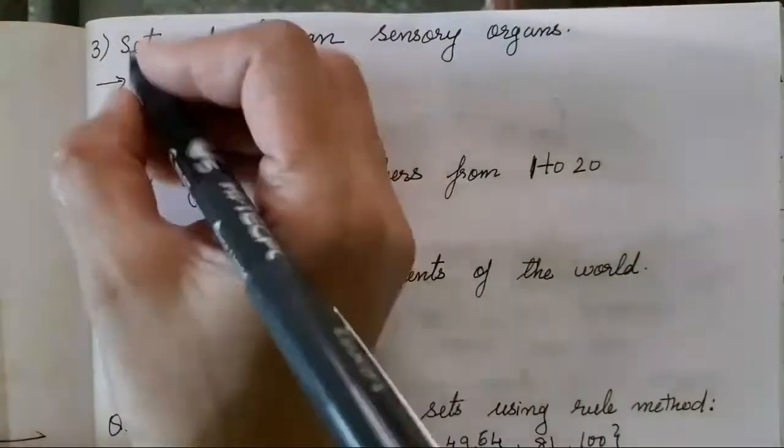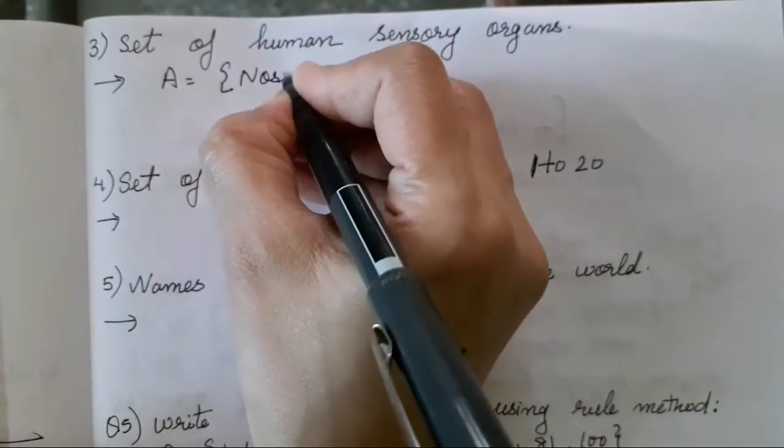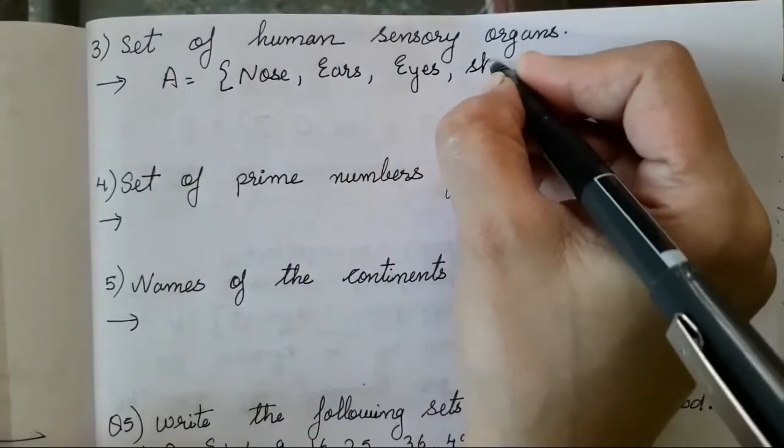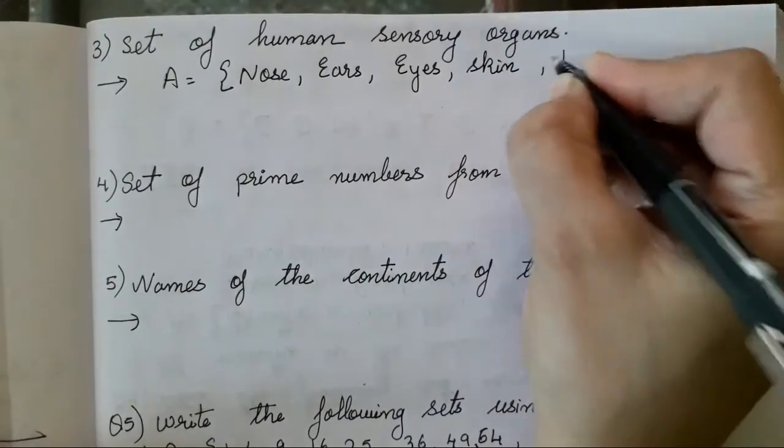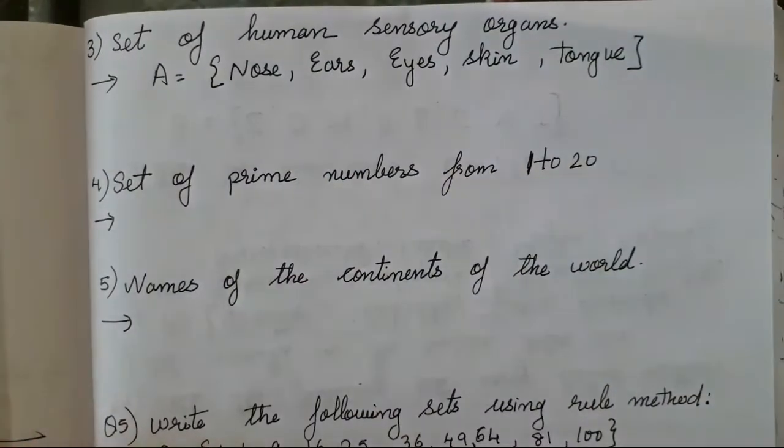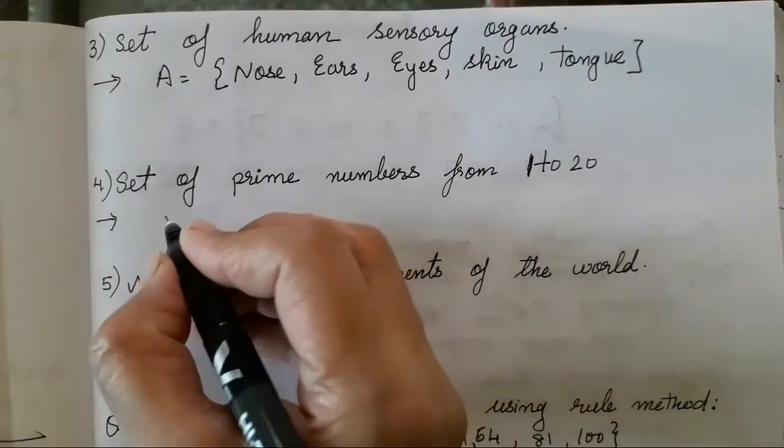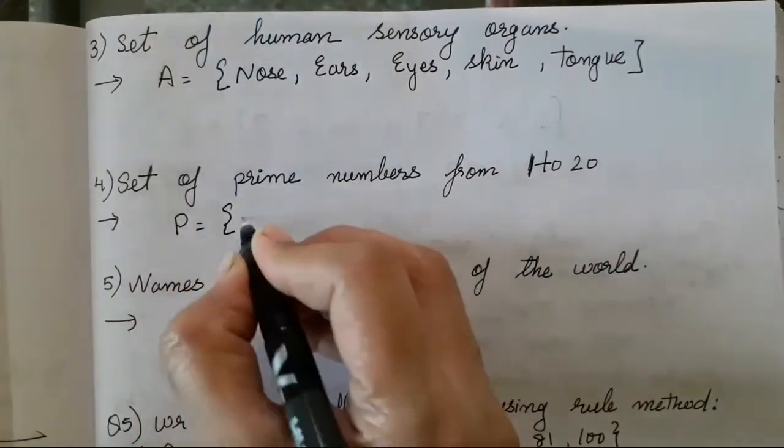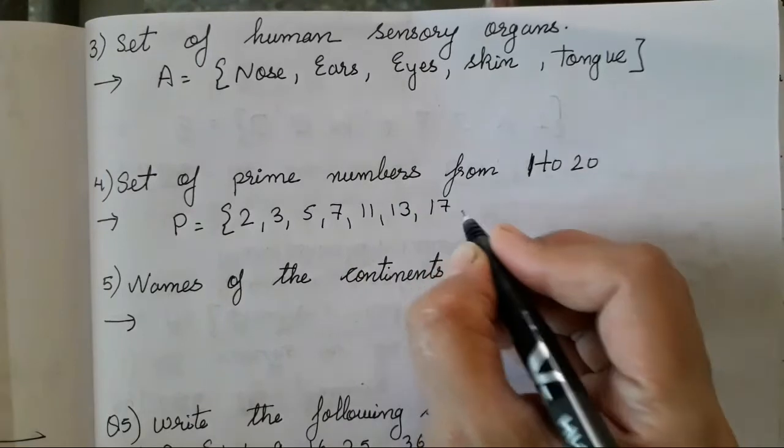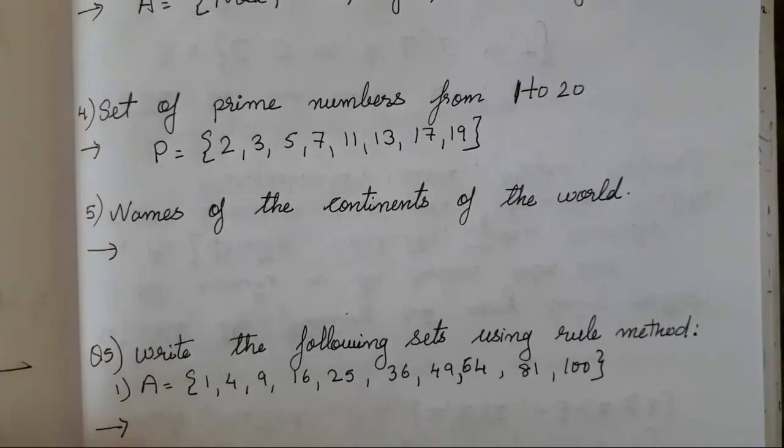So set of human sensory organ, you all can name it as A, which is nose, ears, eyes, skin and tongue. These are our sensory organ, isn't it? So we have to write them in the form of elements. Set of prime numbers from 1 to 20. So only prime numbers you all have to write. So I will take P only, where the prime numbers are 2, 3, 5, 7, 11, 13, 17 and 19. Isn't it easy to write the listing form?